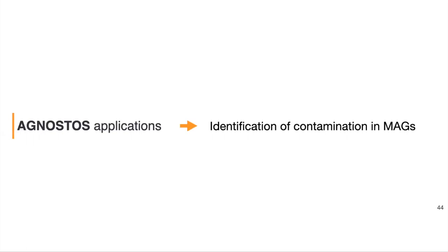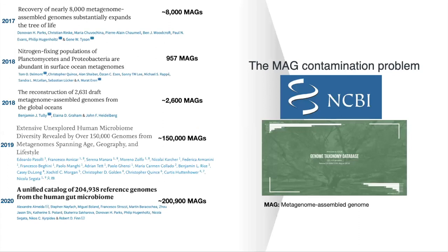I would now like to show some more practical applications of Agnostos. The first involves using Agnostos gene clusters to identify contaminants in metagenome-assembled genomes — specifically chimeric contigs or contigs belonging to different phylogenetic groups compared to the rest of the genome. In the past few years, we have had an explosion in the generation of MAG collections, which is great because they have revealed new perspectives on the evolution of life and represent an invaluable resource providing genomic context to the pool of uncharacterized genes coming from metagenomes. However, these MAGs can contain contaminants due to errors in the reconstruction process.